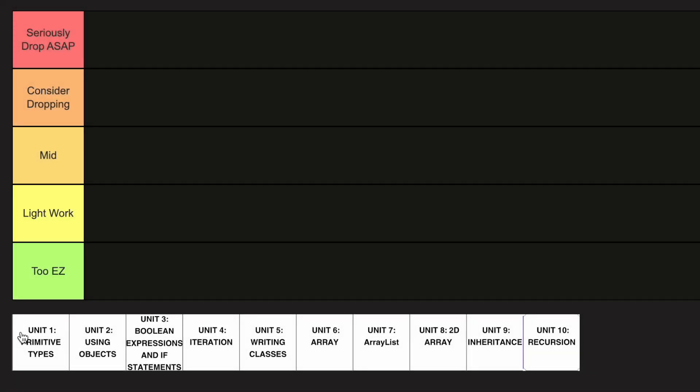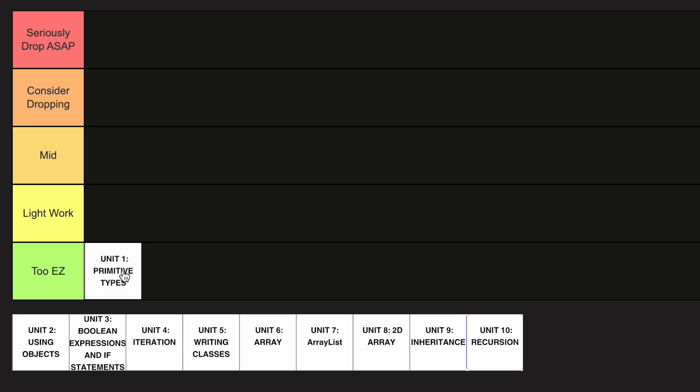Here's a definitive AP Computer Science A tier list in less than a minute. Starting with Unit 1, it's definitely in the Too Easy category. It's literally basic arithmetic, so you should be fine.